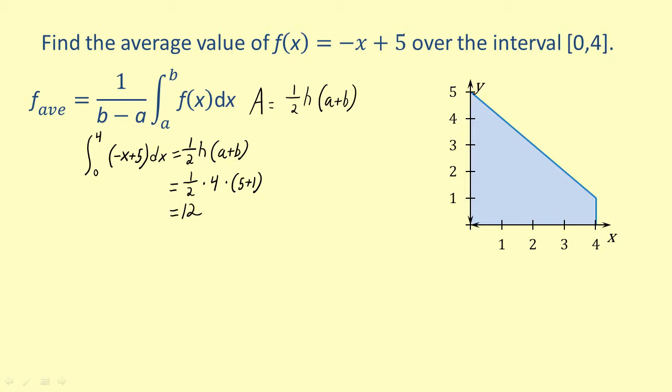Now let's find the average value over the given interval using the formula for the average value of a function. We get 1 over 4 minus 0 times the integral of the given function from 0 to 4 is equal to 1 fourth times 12, which is equal to 3.